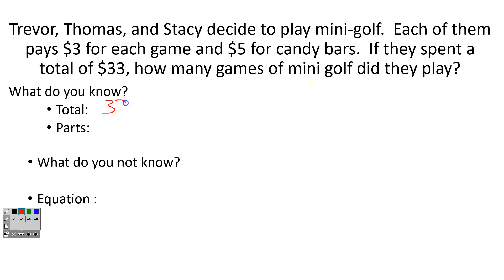Well, I know my total. That's 33. So what parts do I know? Well, I see they paid $3 each game. I see that they bought $5 worth of candy. But there's one more part. And it's the number of people that went. There were three people. So when I look at this problem, I have one, two, three parts to it. So I know based off of that, that this is going to be a multi-step equation. So when I set it up, I have to think that so that way I don't oops on it. What do I not know? Well, I don't know how many games. So the number of games. And I'm going to use the variable m for mini golf.